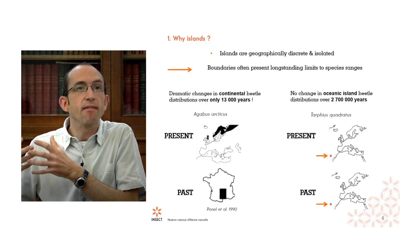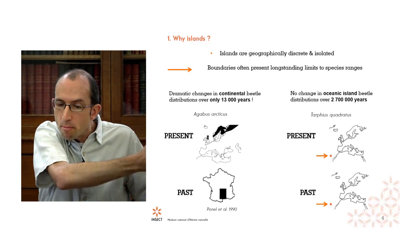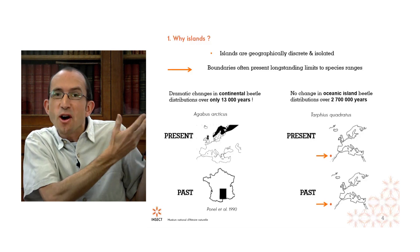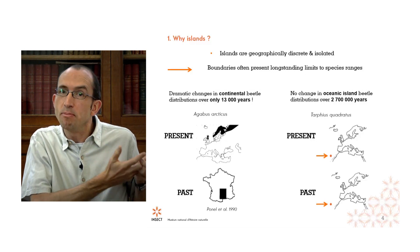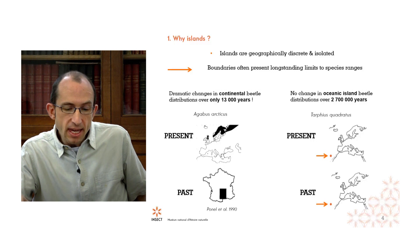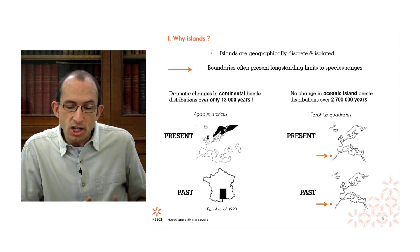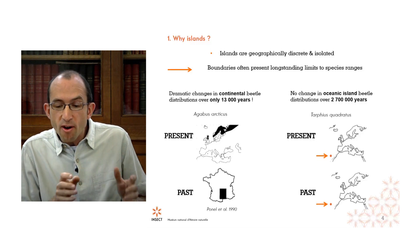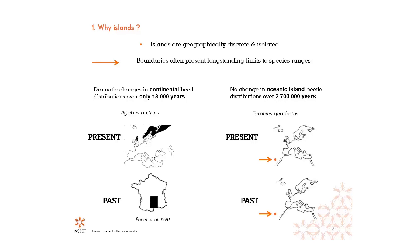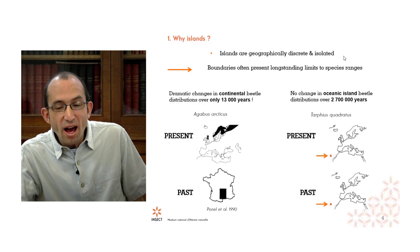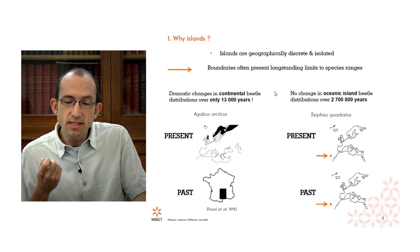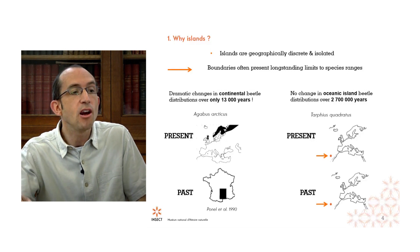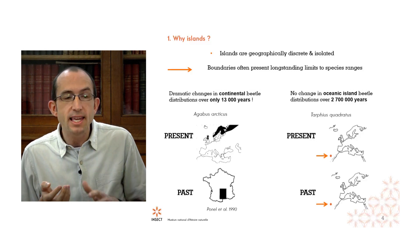Surely you might say we have natural places much closer to home, like the forest of Fontainebleau. Can't we consider this forest to be a natural laboratory? Well, of course we can, and we may also argue that the forest is a bit like an island. But the point I want to make is that oceanic islands have a number of advantages over continental regions for understanding origins of diversity. The first point is that islands are geographically discrete and isolated.